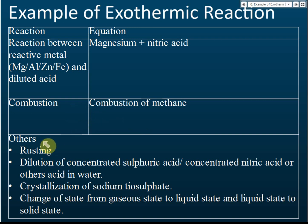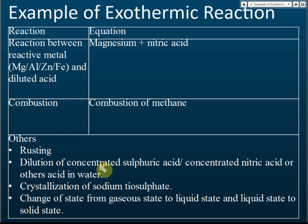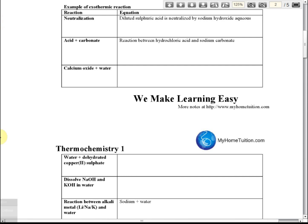Other exothermic reactions include rusting, dilution of concentrated sulfuric acid or nitric acid in water, crystallization of sodium thiosulfate, and changes of state. You need to memorize all these exothermic reactions because in the exam they will show you a reaction and ask whether it is exothermic or endothermic.